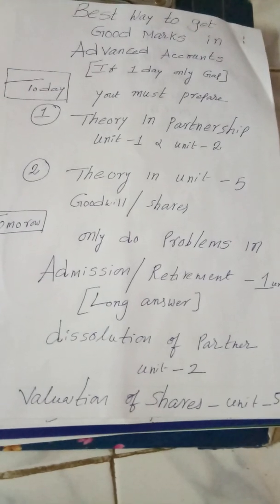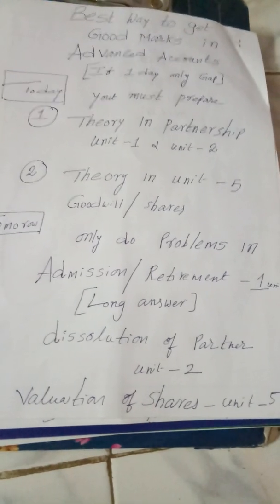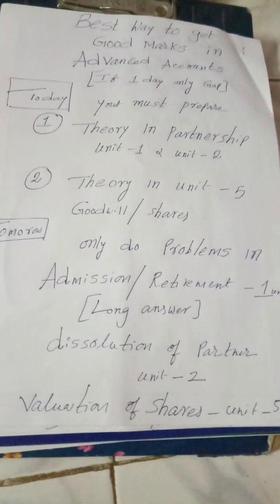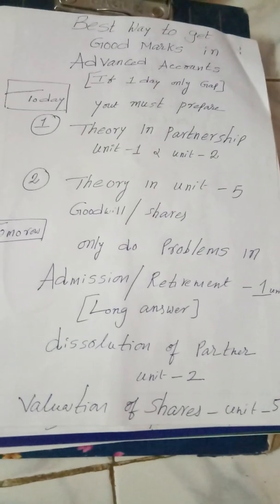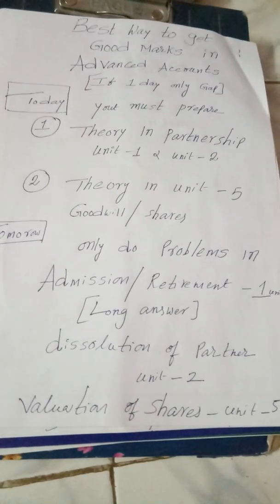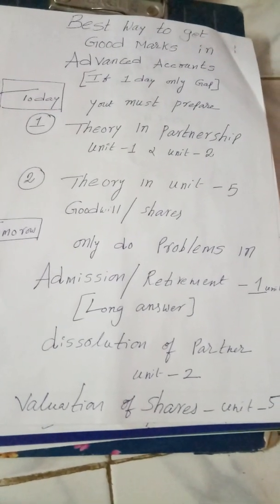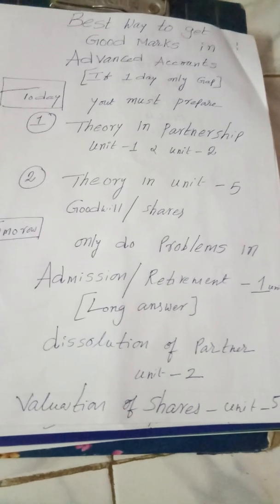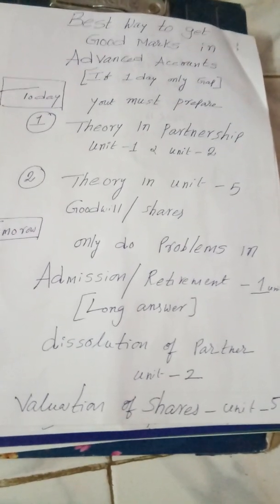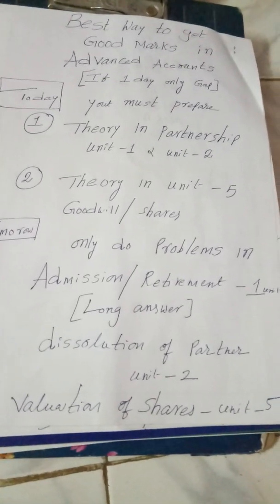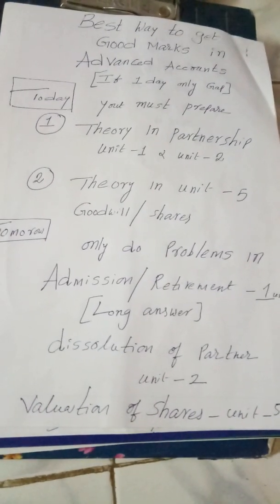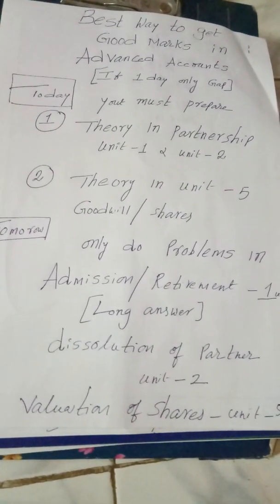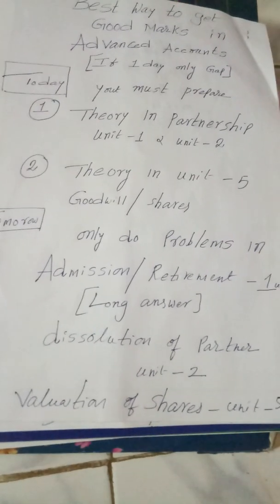Don't just do the problem — make sure you have the right information. Unit Number 2 covers admission, retirement, and death of a partner. Then dissolution and insolvency — you need to be able to solve those problems as well, including insolvency of a partner.